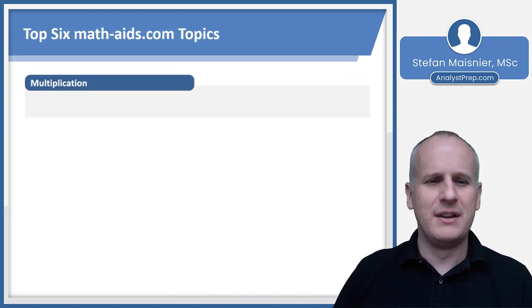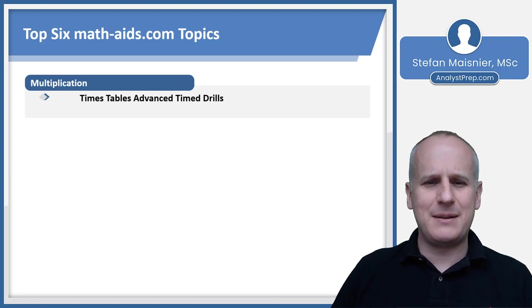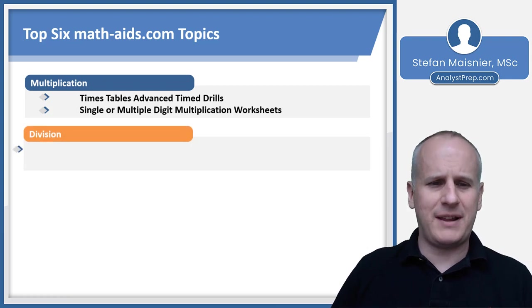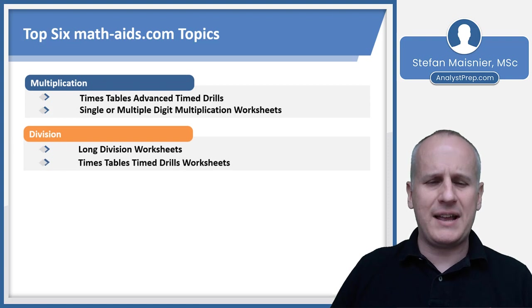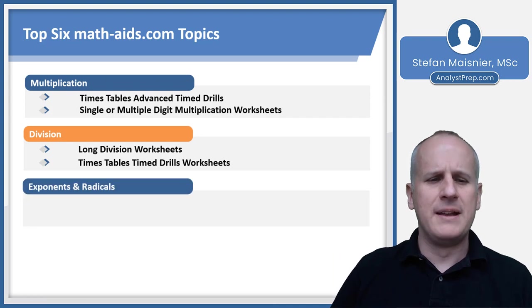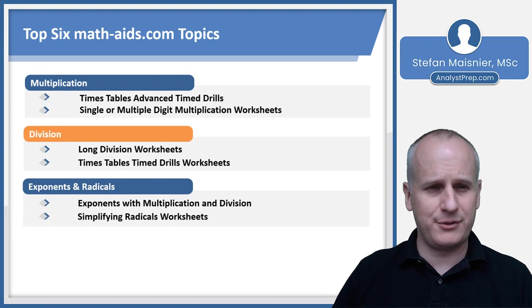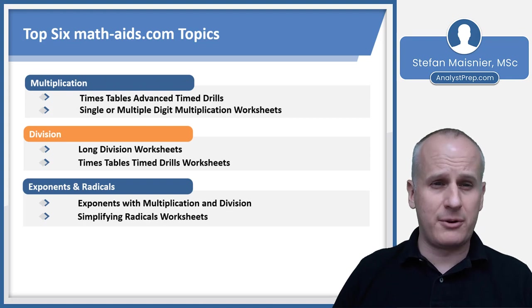So our top six topics. For multiplication, you want to cover your times tables, advanced time drills, and your single or multiple-digit multiplication worksheets. Just really executing on the approaches that we talked about moments ago. Now, you'll also want to cover division. And in division, you'll want to do some long division worksheets and the times tables time drills worksheets, so very similar to the multiplication. Then you've got your exponents and radicals. You'll want to do exponents with multiplication and division, and you'll want to learn and practice how to simplify radicals. And we'll have some more discussions around exponents and radicals in an upcoming lesson here. But they are another manual calculation skill that the exam is basically going to expect you to be able to manage.